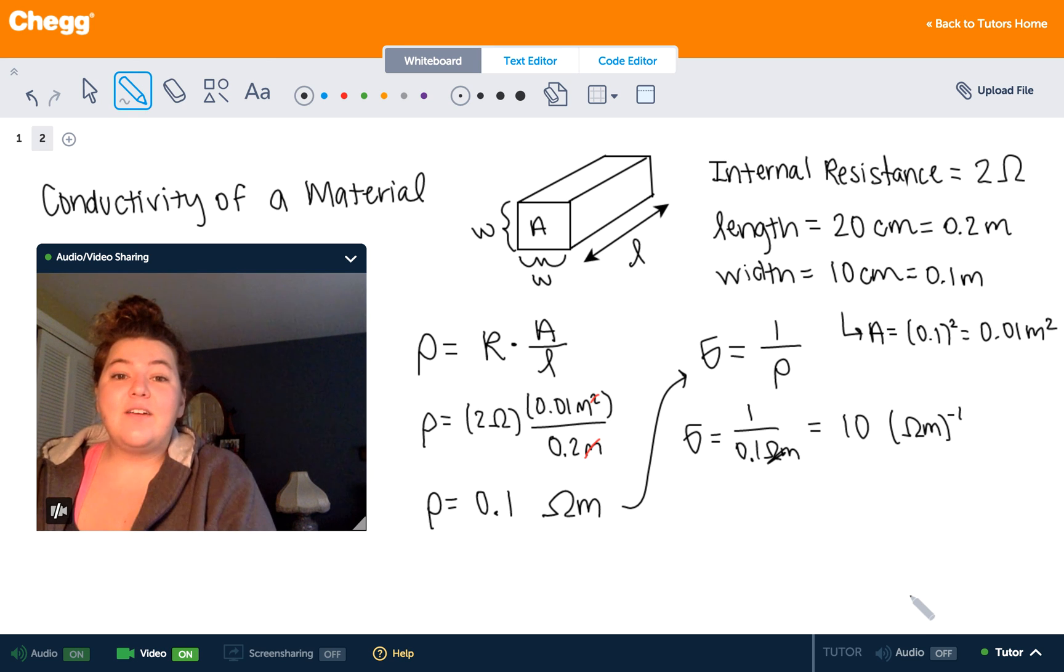So this is how to find the conductivity of a material, which again, is the likelihood of current to flow through the material. The opposite of resistivity. Hope this helps you all out. If you need any assistance with your E&M problems, feel free to hit me up or any other physics tutor here on Chegg.